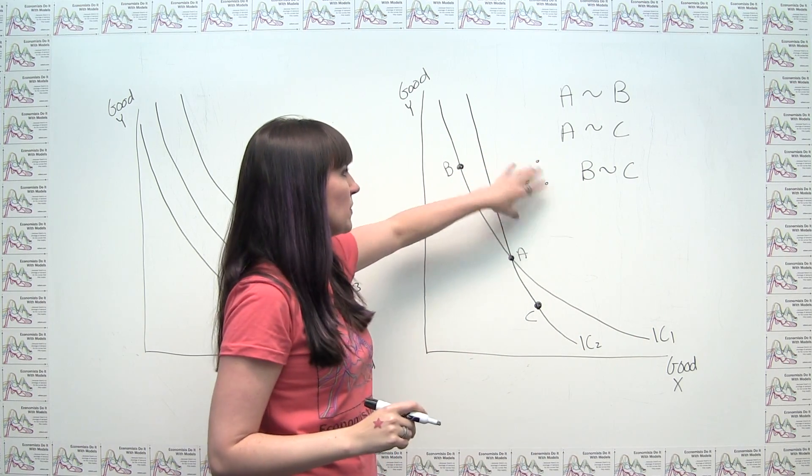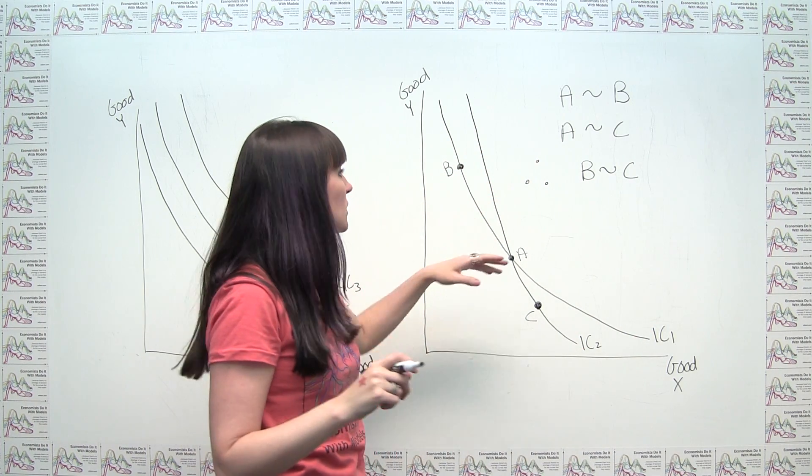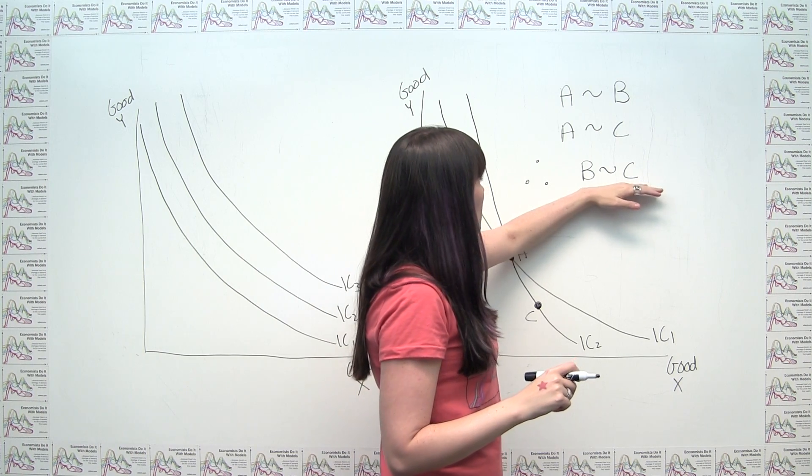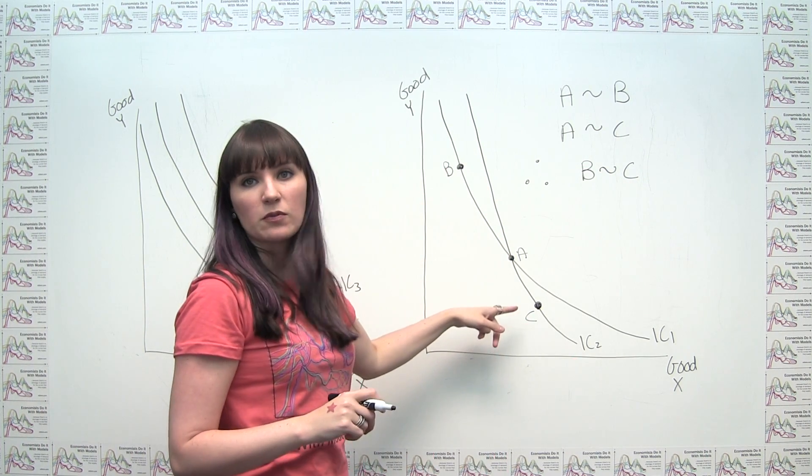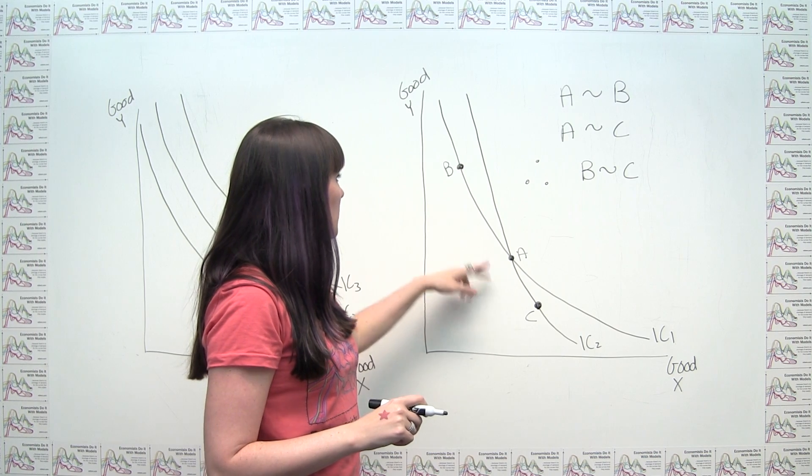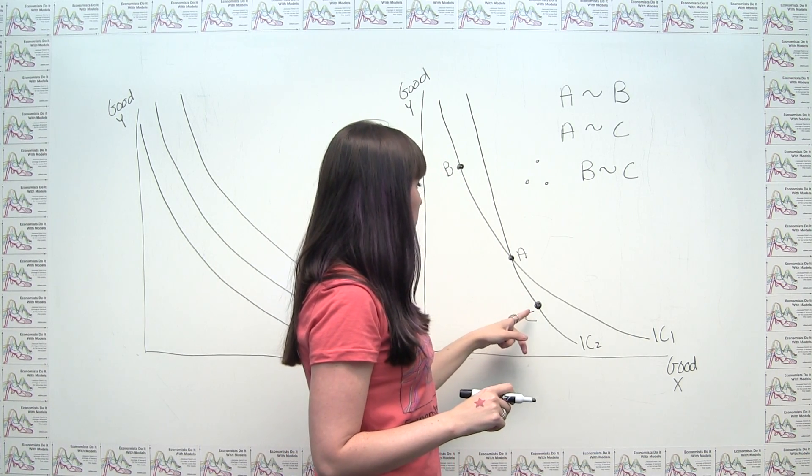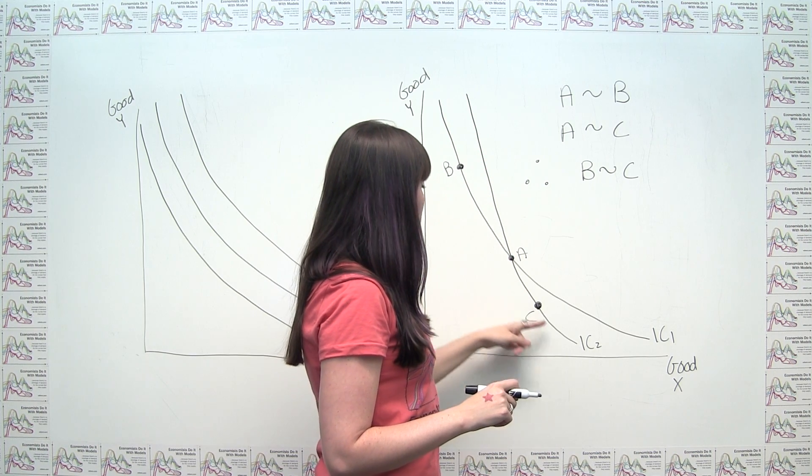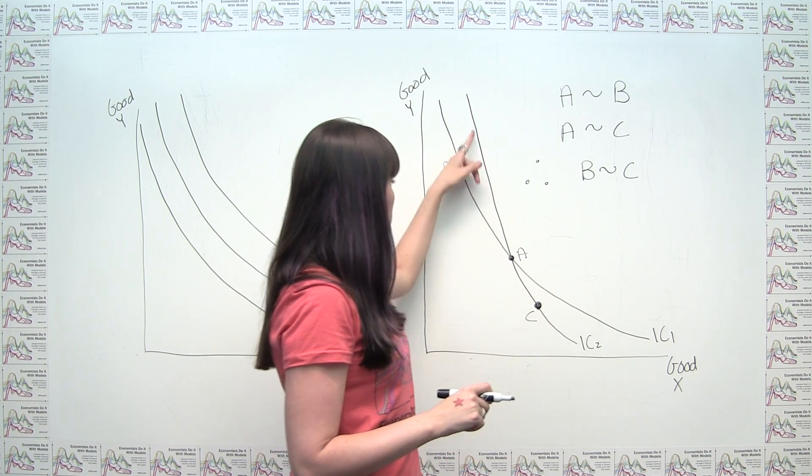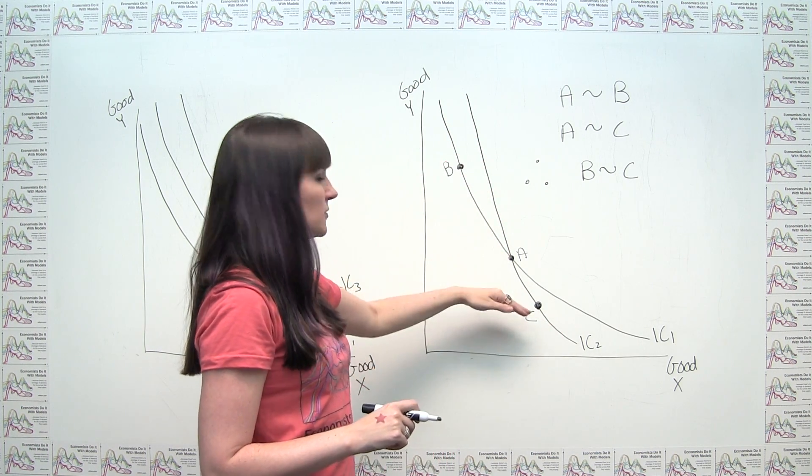This is just the mathematical notation for therefore. And we can see here that that's not consistent with what we have in our diagram. Because B was only on indifference curve 1 and not indifference curve 2. And C was only on indifference curve 2 and not on indifference curve 1.